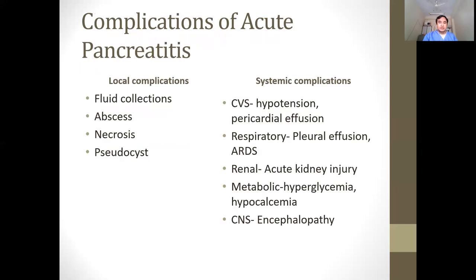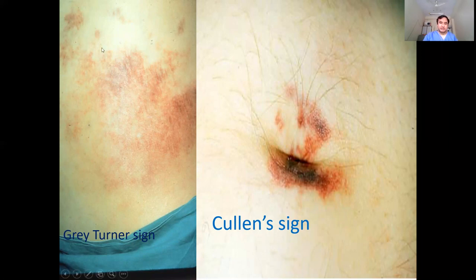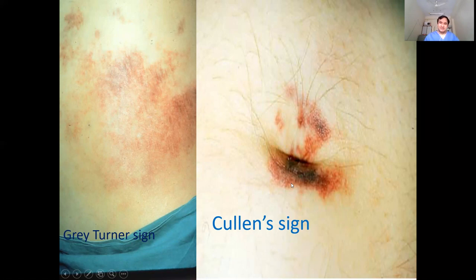Two important but rare clinical signs worth knowing: Grey Turner's sign is hemorrhagic discoloration in the flank. Cullen's sign is hemorrhagic discoloration around the umbilicus. Fox's sign is hemorrhagic discoloration in the inguinal region. These signs are interesting but rare and are usually seen in patients with hemorrhagic pancreatitis.